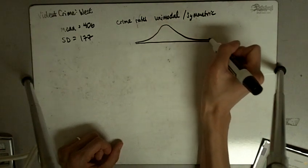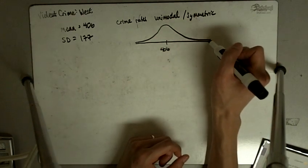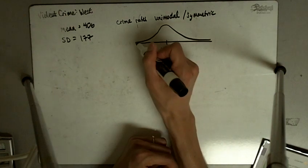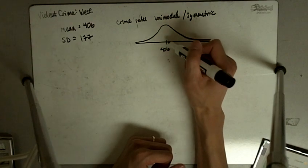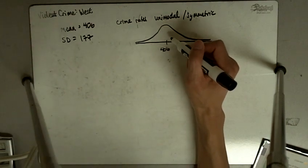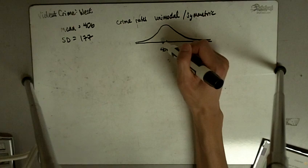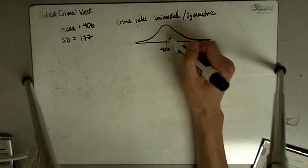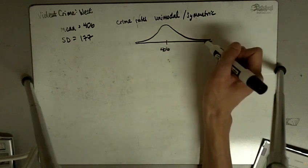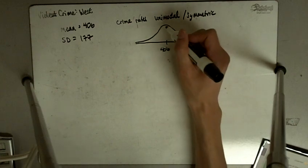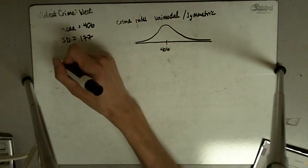The idea is that it's unimodal and symmetric. In the center we have 406, and some states have much more crime than 406, and some states have much lower crime than 406. But around 350 to 450 is going to be the most common — a lot of states have crime rates around that. A couple states have much higher crime rates and a couple have much fewer, but the further away from the center you get, the less you have. That's what it means to be unimodal and symmetric. And so here, we can use the empirical rule.